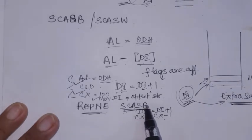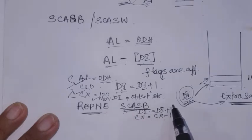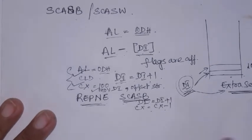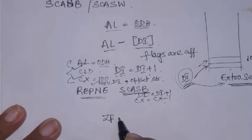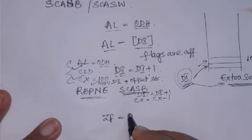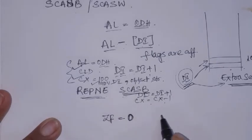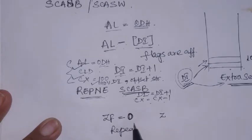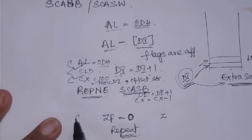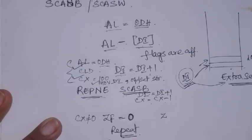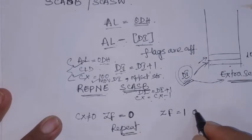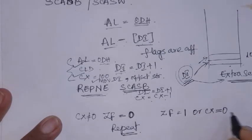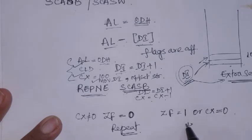The next byte is compared and flags are affected. If they are equal, zero flag will be 1; if not equal, zero flag will be 0. If zero flag equals 0 (not equal) then repeat; if zero flag equals 1 (bytes are equal) or CX equals 0, then it should come out of the loop.